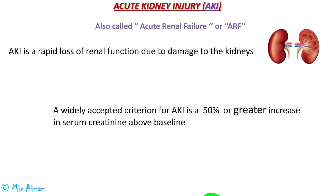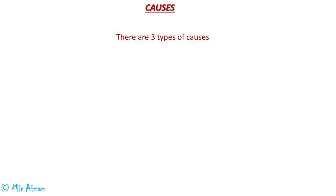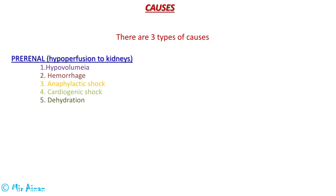The normal serum creatinine level in the body is less than 1 mg per deciliter. There are three causes of AKI. The first is the pre-renal cause, which includes all those causes that lead to impaired blood flow to the kidneys, leading to hypoperfusion of the kidneys, including hypovolemia, hemorrhage, and anaphylactic shock.